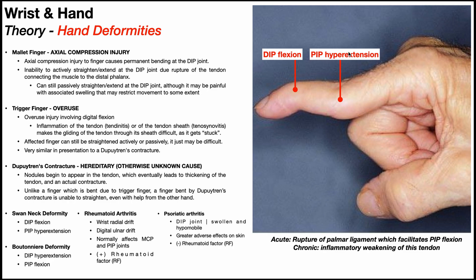If there's only DIP flexion but no PIP hyperextension, that rules out a swan neck deformity and you should consider mallet finger instead. This can be an acute injury with a rupture of that ligament, or there can be a chronic weakening through chronic inflammation, as seen in rheumatoid arthritis. Swan neck deformity can exist by itself or as a secondary effect of autoimmune diseases like RA.